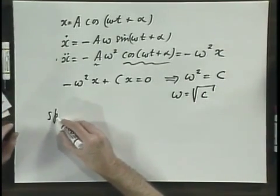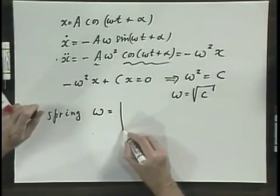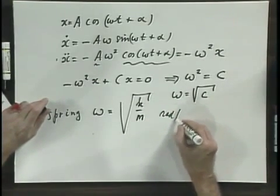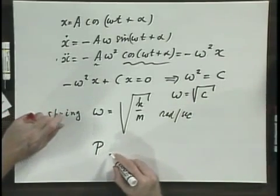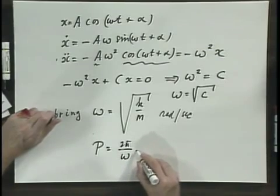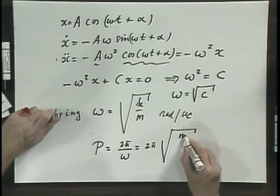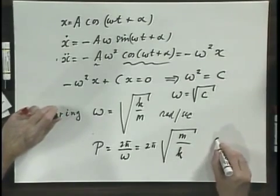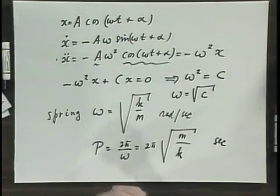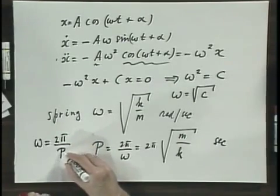In the case of our spring system, omega — the angular frequency — would be the square root of k over m, in radians per second. The period of the oscillation in seconds, which is 2 pi divided by omega, would be 2 pi times the square root of m over k. And omega equals 2 pi divided by the period T.